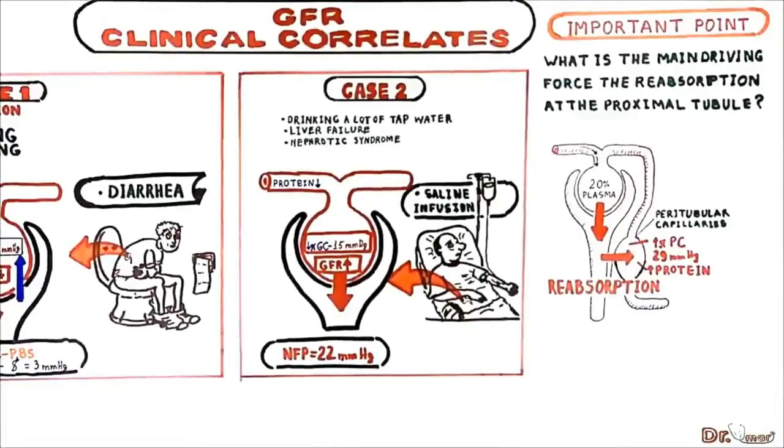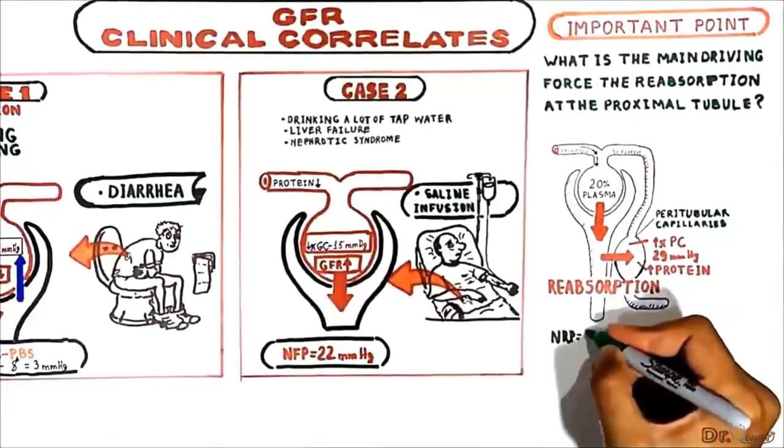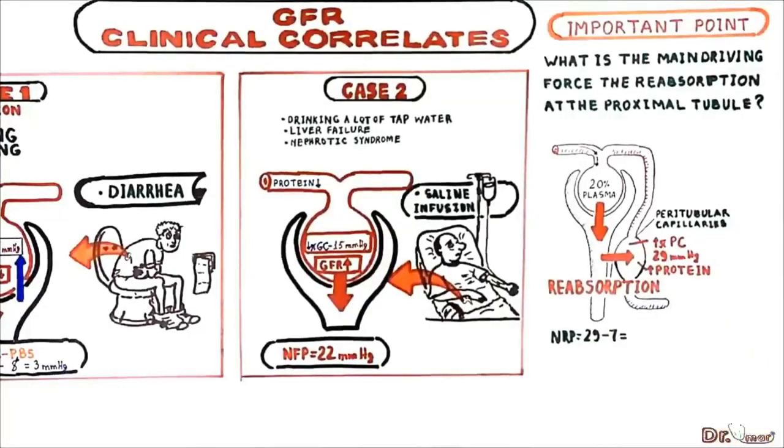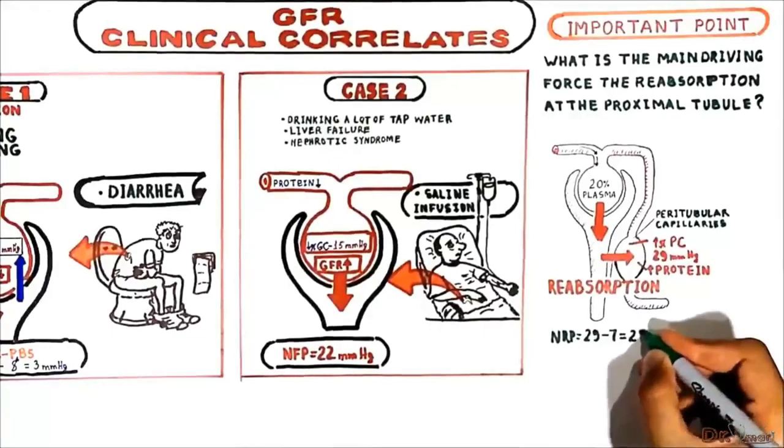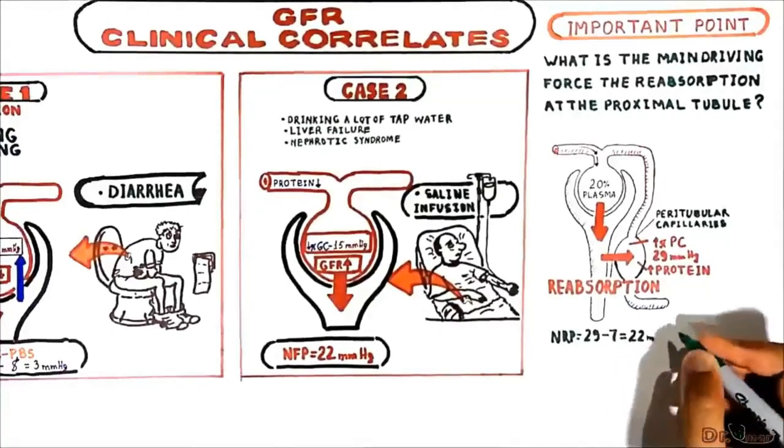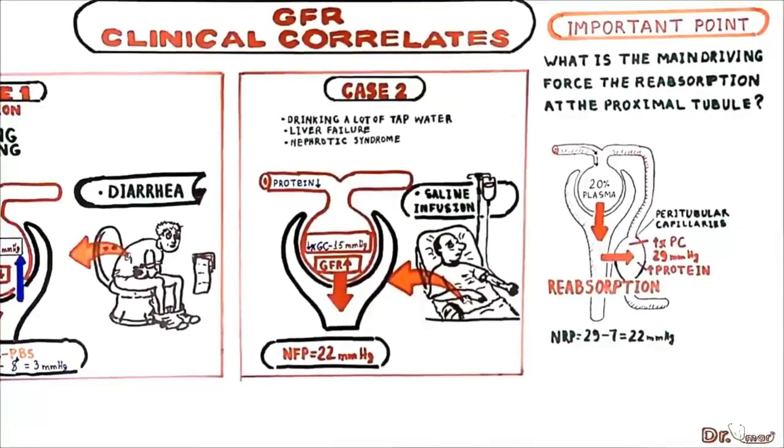The protein is concentrated here because as blood passes through the glomerulus it filtrates 20% of its plasma without protein. To calculate net reabsorption we take 7, which is the hydrostatic pressure in peritubular capillaries, from 29, which is the oncotic pressure. We got 22 mmHg, which would be the net reabsorption pressure in peritubular capillaries.